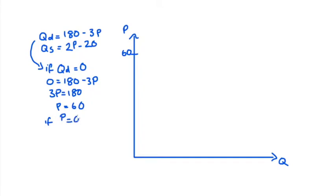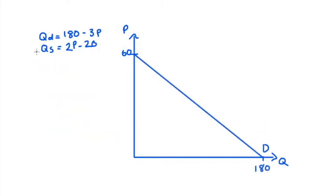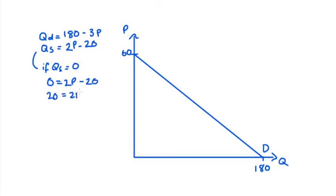The quantity-axis intercept is found by setting P = 0, which gives Q = 180. To draw the supply curve, I find the price-axis intercept by setting QS = 0. Solving 0 = 2P − 20 gives P = 10, so my supply curve starts from P = 10 on the price axis.